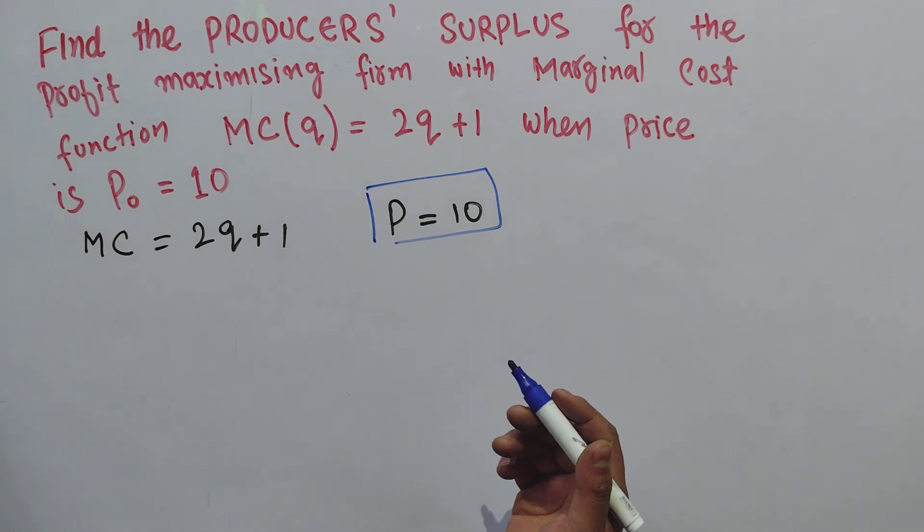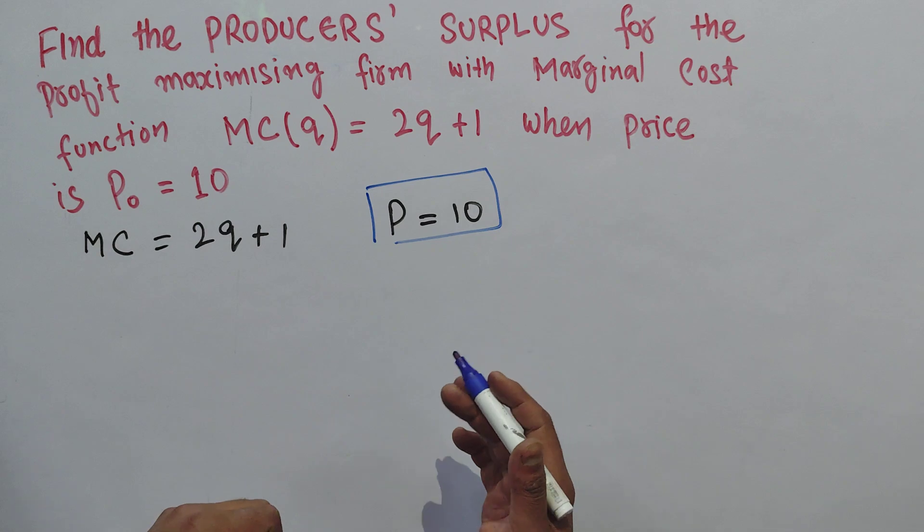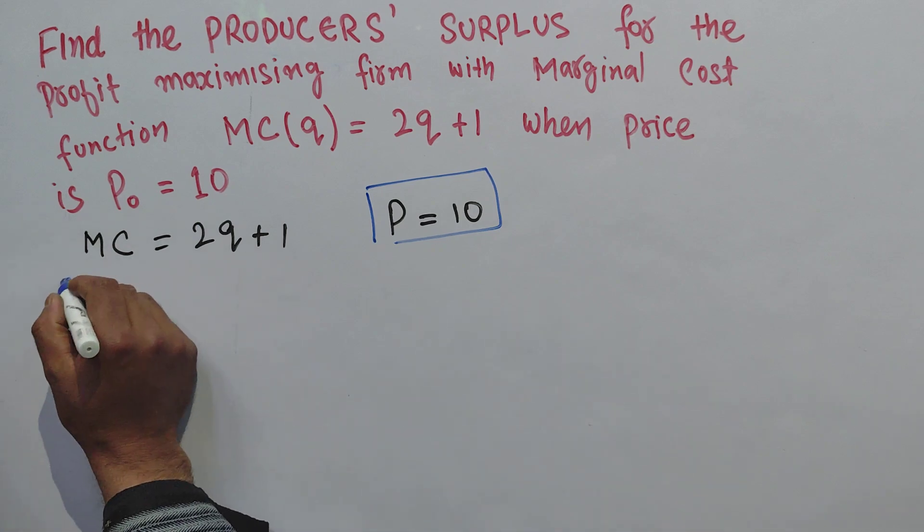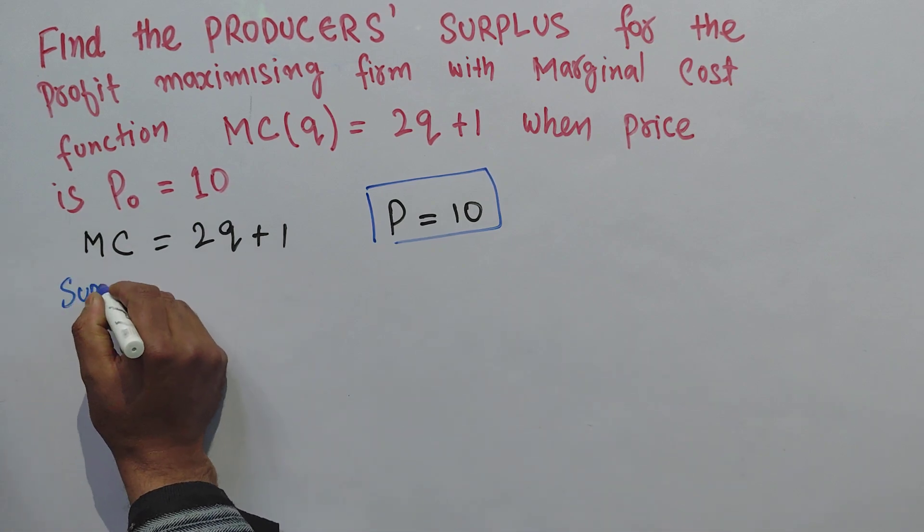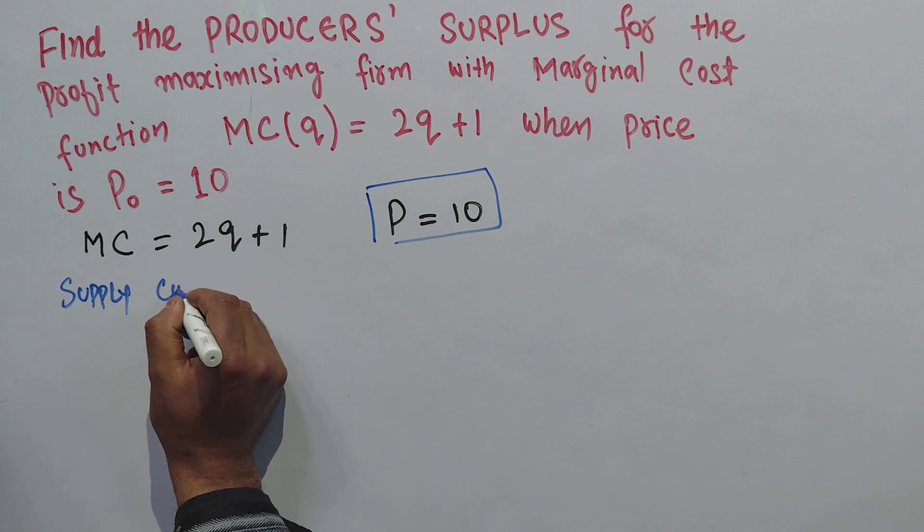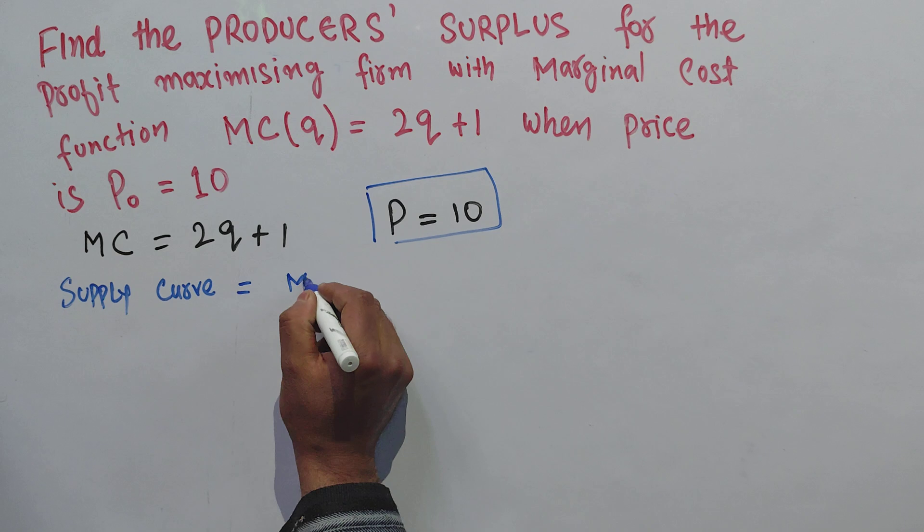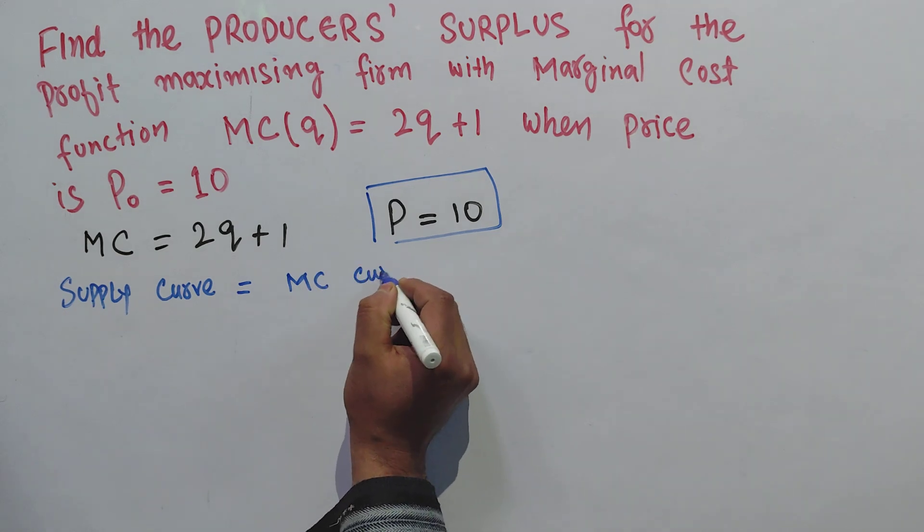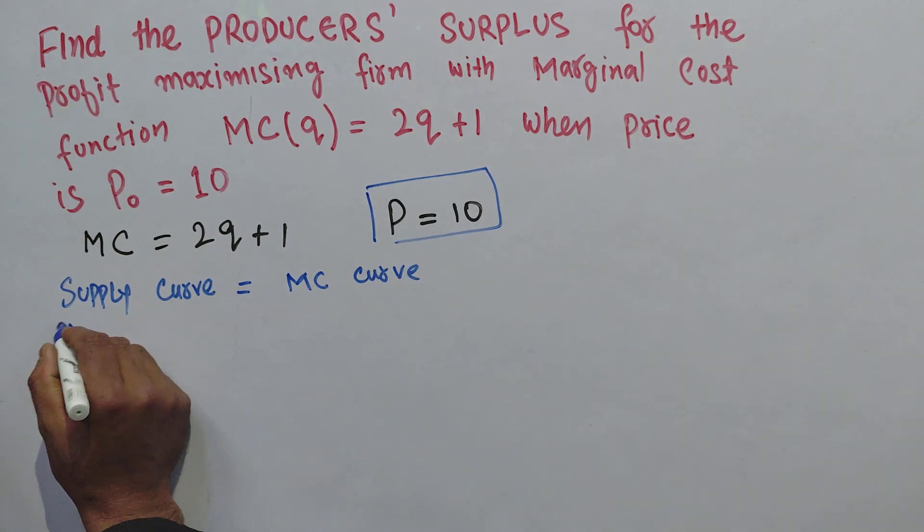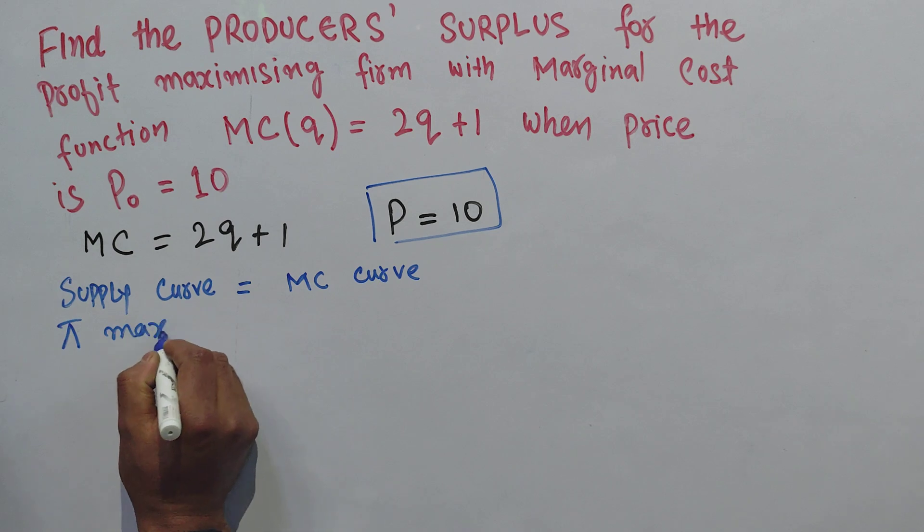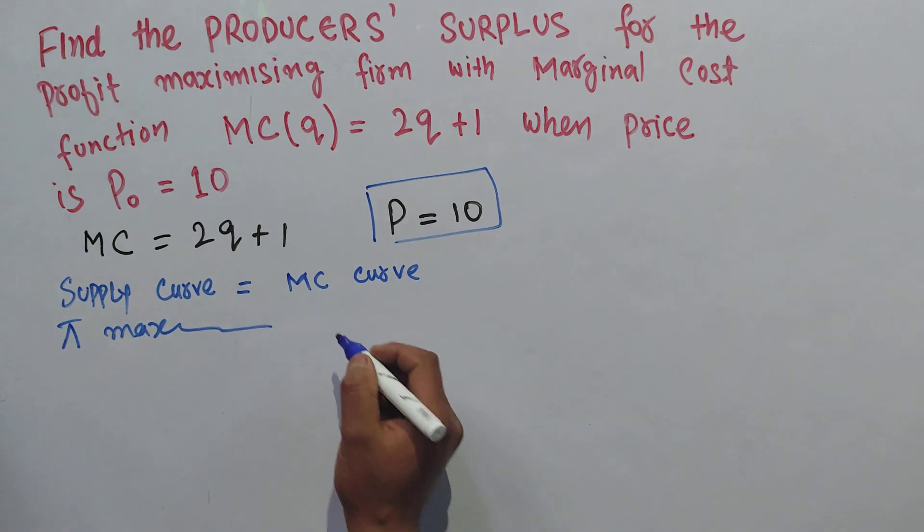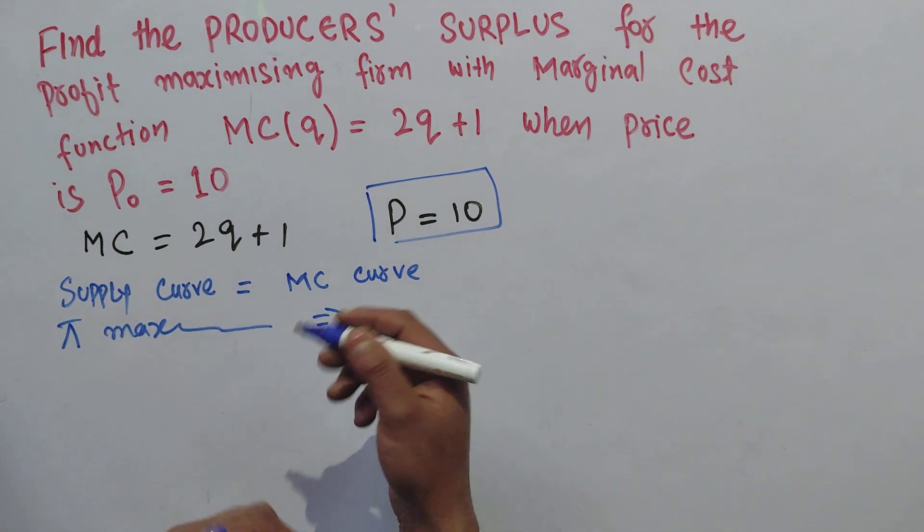In case of a perfectly competitive firm, what is the supply curve? We know that the supply function is actually the marginal cost curve, and profit maximization requires that the firm equates the price with the marginal cost.